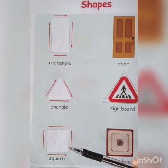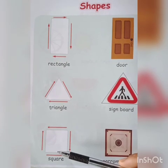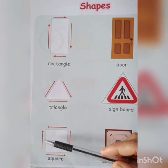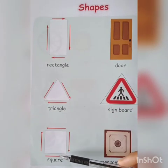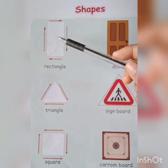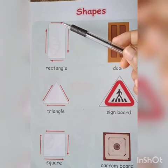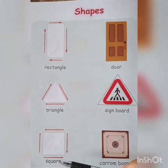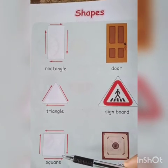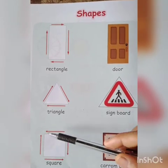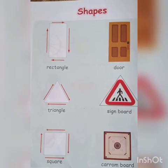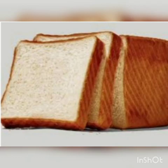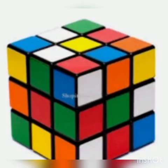The sixth one is square. Square also has four sides, and all four sides are equal in size. We see here rectangle and square: rectangle has different side lengths — two sides are equal and the other two sides are equal. But square has all four sides equal in size. Like a carrom board, like a piece of bread, like the shape of a Rubik's cube, and the shape of a dice.